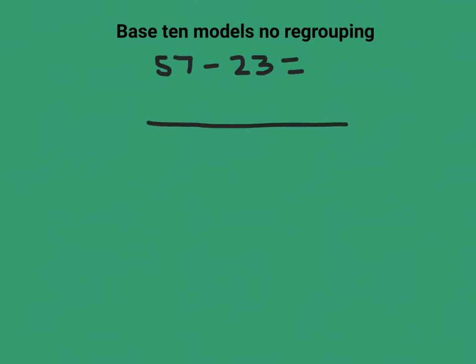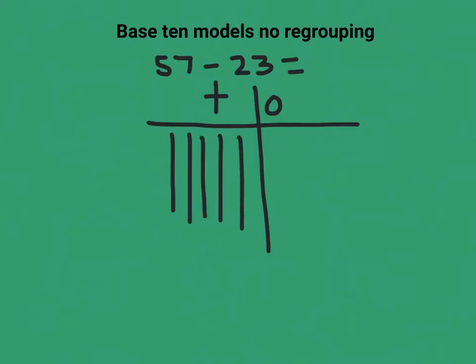So we'll start off with a tens and ones chart. I'll go ahead and draw out 57: 10, 20, 30, 40, 50, and 1, 2, 3, 4, 5, 6, 7.